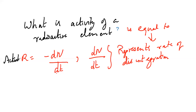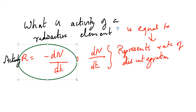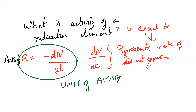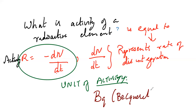Activity R = −dn/dt — this is our main focus. One common one-mark question asked is: what is the unit of activity? Radioactivity is named after Henry Becquerel, so the answer is Becquerel (Bq).